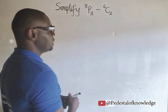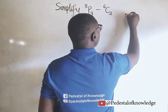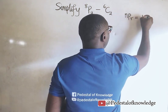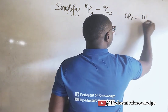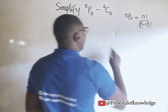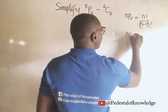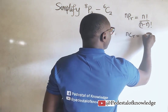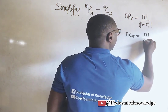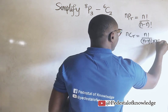We need to understand that n permutation r is equal to n factorial divided by n minus r factorial. And n combination r is equal to n factorial divided by n minus r factorial multiplied by r factorial.